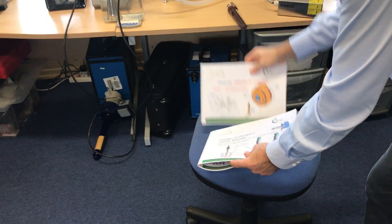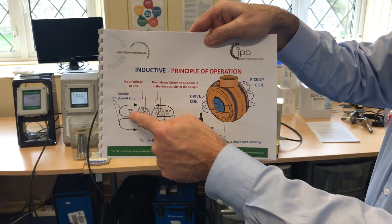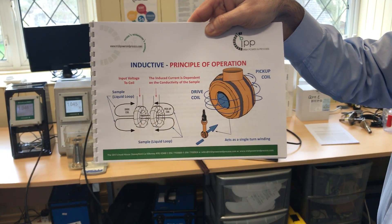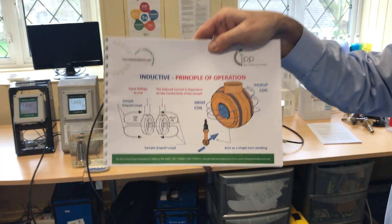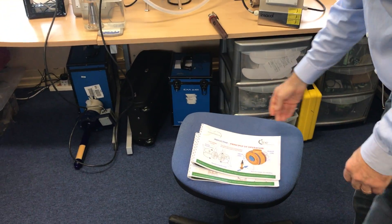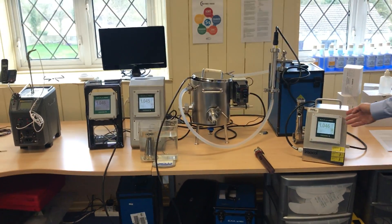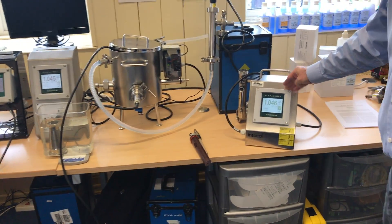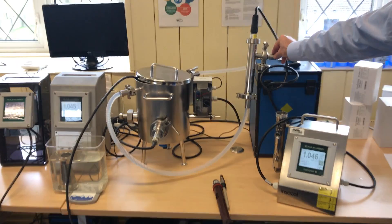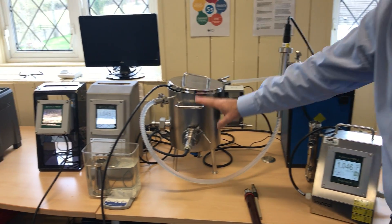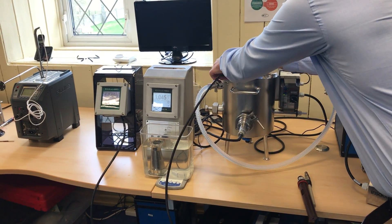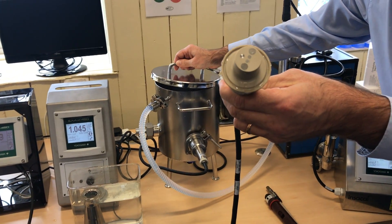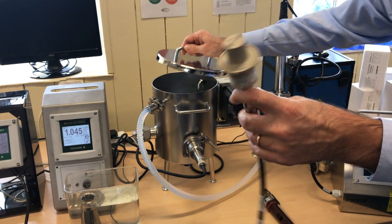The inductive sensor utilizes the resistance in the sample to make its measurement. Here we have an Instacal conductivity master meter installed in a bypass loop. We have an inductive sensor and one of the Mettler-Toledo open sensor designs.